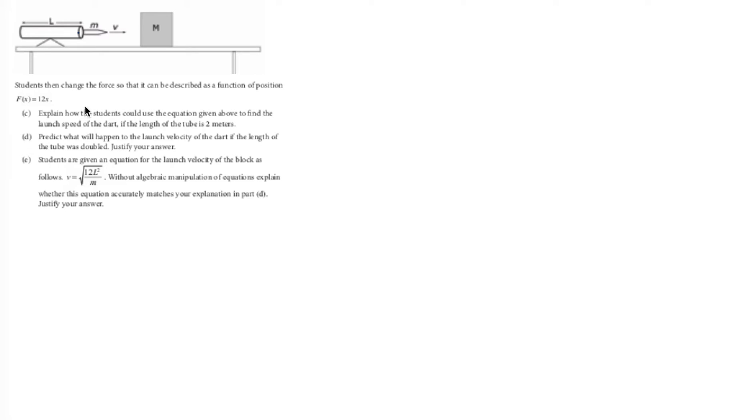Part C: the students change the force used to launch this guy. So this force here, going that way, they change it so it can be described as a function of position: f of x equals 12x. That's right here if you can read it. That 12 is like nails on a chalkboard to me. Just looking at it is making my blood boil, because it's dimensionally incorrect. x would have units of distance, and so 12x would have units of distance, and that's not units of force.